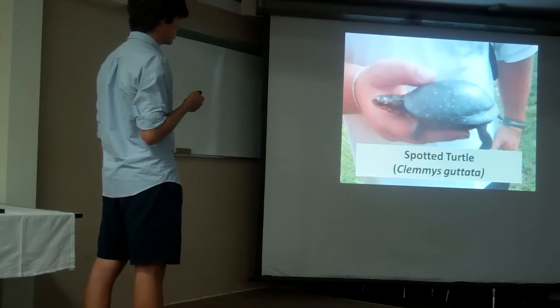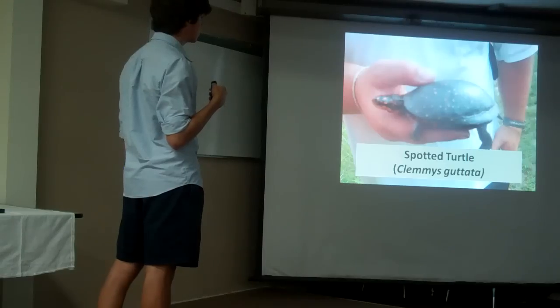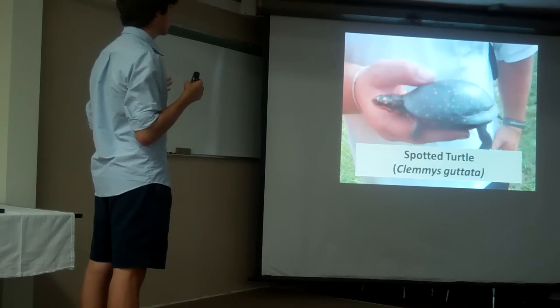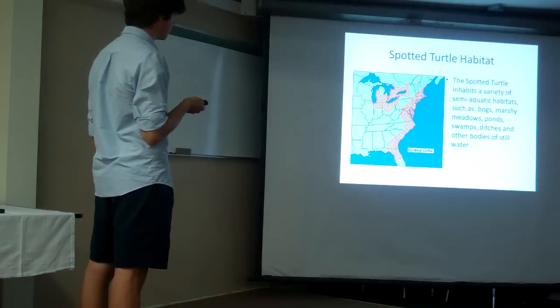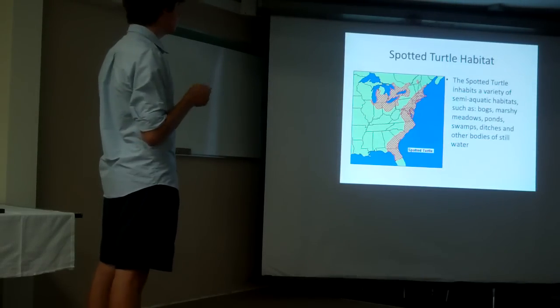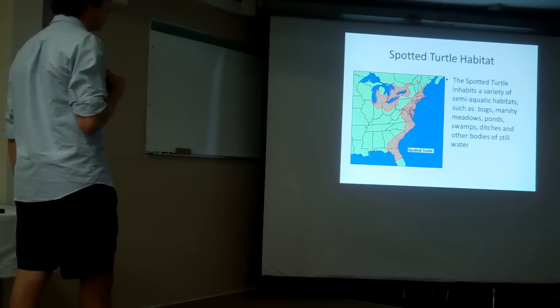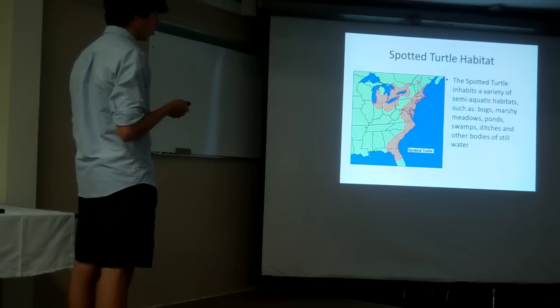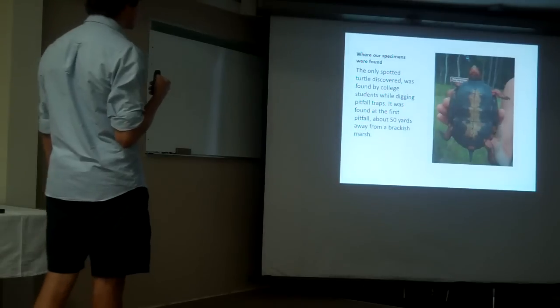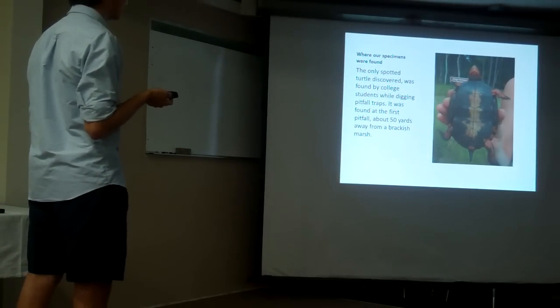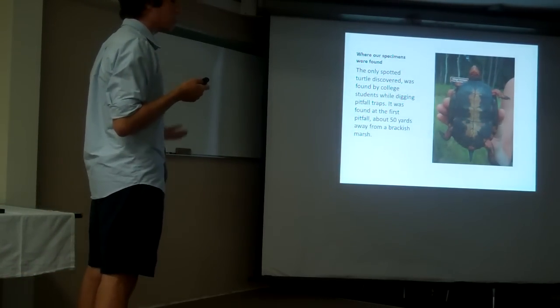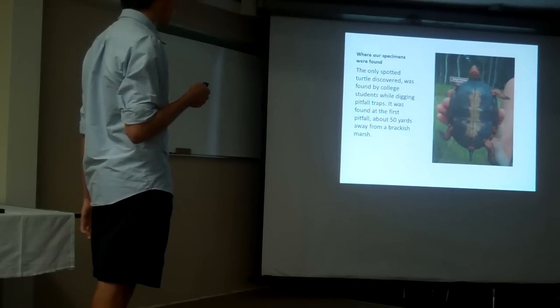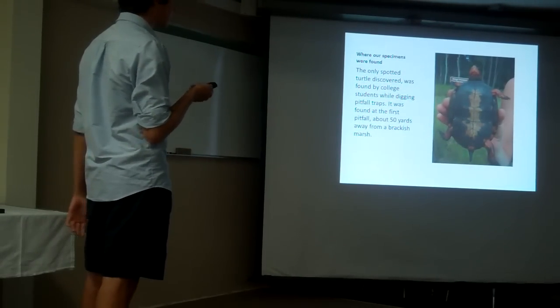The next one we found was the spotted turtle. You can tell the difference between the spotted turtle and the eastern box turtle because instead of having orange kind of blotches on its shell, it has just small polka dots all over its shell. Unlike the eastern box turtle, it's a semi-aquatic turtle and can inhabit most any body of water as long as it's still or stagnant. The only specimen we found was found by the college students while they were digging pitfall traps, about 50 yards away from a brackish marsh. It would be hard for the turtle to get from the brackish marsh to the area where we found it, so it's interesting to find there.